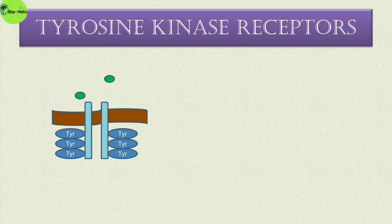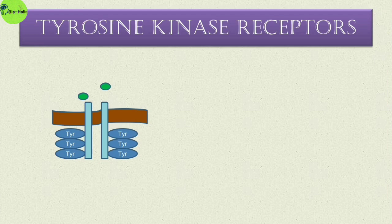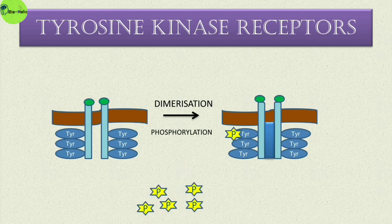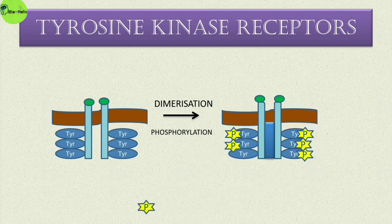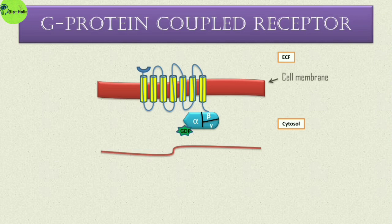For tyrosine kinase linked receptors: they are called so because tyrosine molecules are attached to the receptor. When a ligand binds, two receptors join together — dimerization occurs. Then they autophosphorylate each other, meaning the tyrosine molecules attached to the receptors get phosphorylated. This phosphorylation causes various cellular changes.